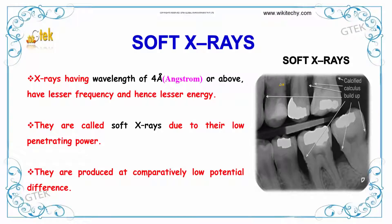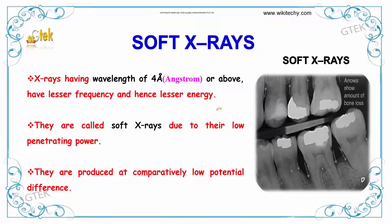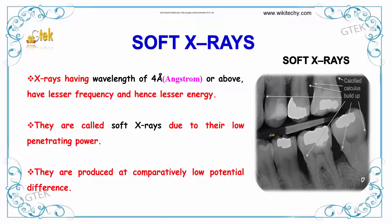If we talk about soft X-rays, X-rays with a wavelength of 4 angstrom or above will have lesser frequency and hence lesser energy. They are called soft X-rays due to their low penetrating power. They are produced at comparatively low potential difference.